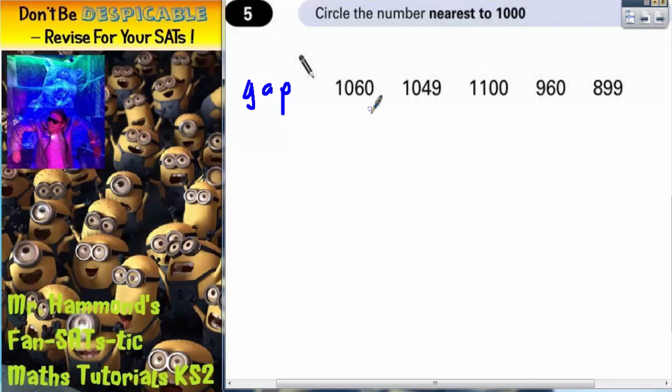Well, 1060 is obviously more than 1000 and that is 60 more, so that's a gap of 60.